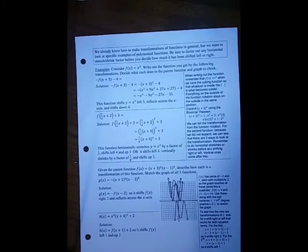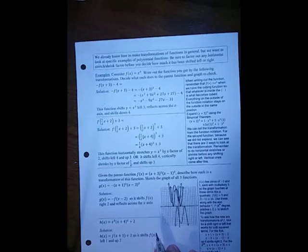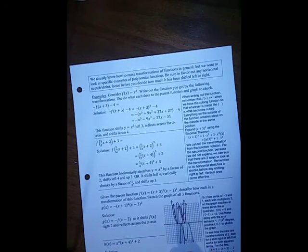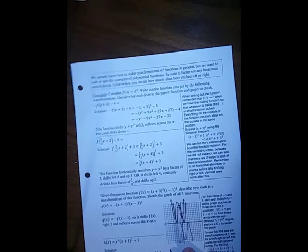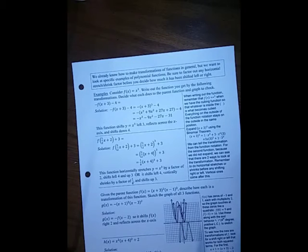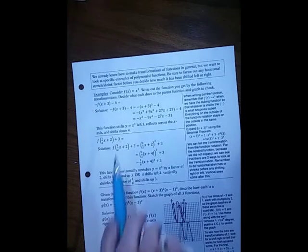Now, we already know how to make transformations in general, but we want to look at specific samples for our polynomial functions. And make sure that you factor out any horizontal shrink or stretch before you decide how it's been shifted left or right, because they don't really work like we think they do. Remember that the x ones work the opposite. So in order to know how much it shifts, we have to first have that horizontal stretch or shrink factored out of that.